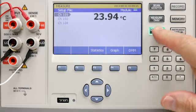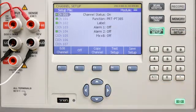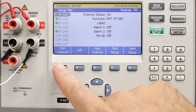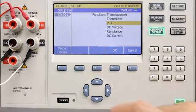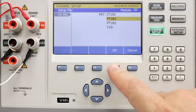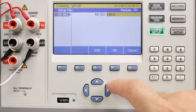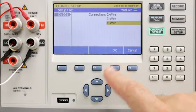Press channel setup. Set channel 1 to on. Select edit channel. Set function to PRT. We'll choose PRT PT385, set the resistance value to 100 ohms and choose 4-wire PRT.